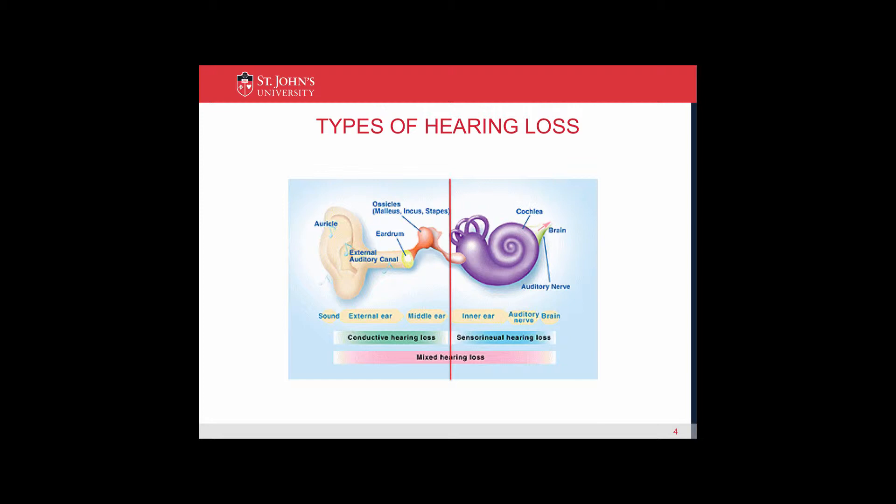There are three types of hearing loss. A conductive hearing loss occurs in the outer ear or the middle ear. A sensorineural hearing loss occurs in the cochlea, the auditory nerve, up to the auditory cortex. And a mixed hearing loss is a combination of a conductive hearing loss and a sensorineural hearing loss.